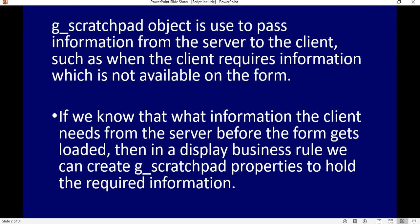If we know what information the client needs from the server before the form gets loaded, then in a display business rule we can create g_scratchpad properties to hold the required information. We will see practically how we can hold the information in a display business rule under g_scratchpad and how we can use that g_scratchpad object in a client script.